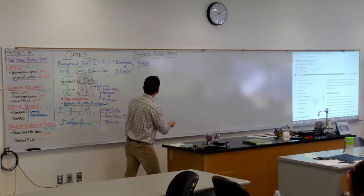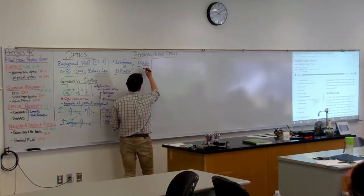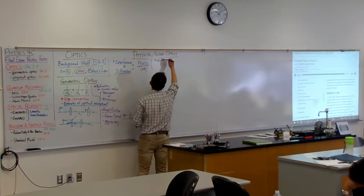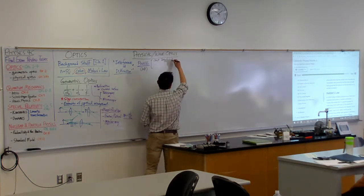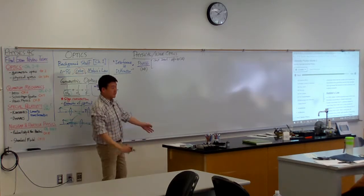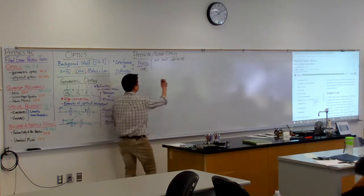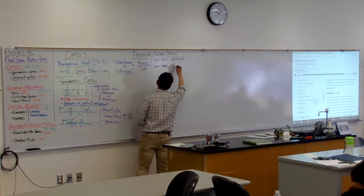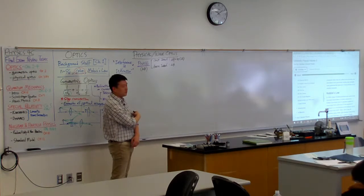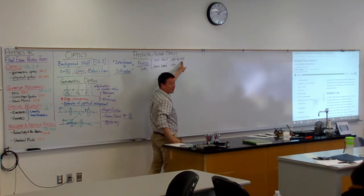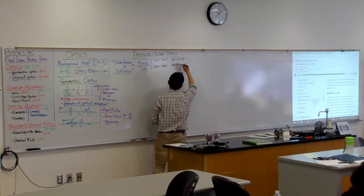Phase or phase difference delta phi determines whether you get constructive or destructive interference. For constructive interference, the phase difference is an integer multiple of 2π — an integer multiple of a whole cycle. For destructive interference, the phase difference is an odd multiple of π, or a half-integer multiple of 2π — always off by half of a cycle.